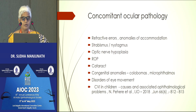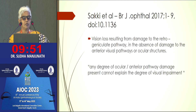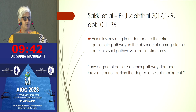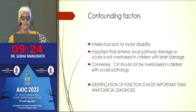We all know that all these children have some amount of concomitant ocular pathology, and it has been well documented in our population by the study conducted by L.V. Prasad Eye Institute. Internationally, how CVI has been defined and the terminologies used were studied in a review article by Saki and others. They recommended that an additional clause be added to the definition of CVI: any degree of ocular or anterior pathway damage present, if it does not explain the degree of visual impairment, should also be considered as CVI.